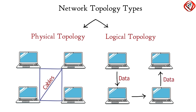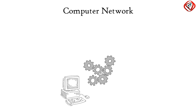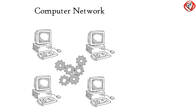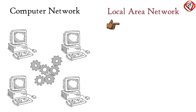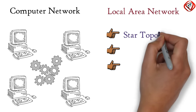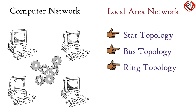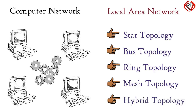The most common computer network used to interconnect physically distributed computers is the local area network, which has three main topologies: star topology, bus topology, and ring topology. Others are mesh topology and hybrid topology.